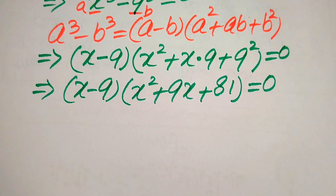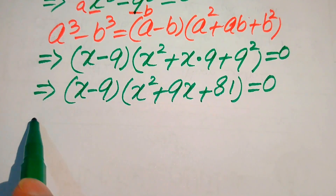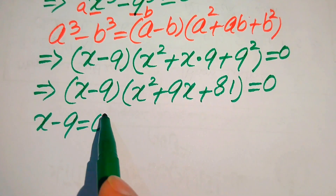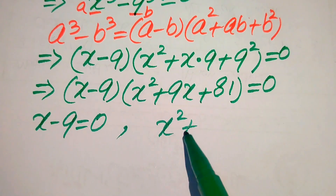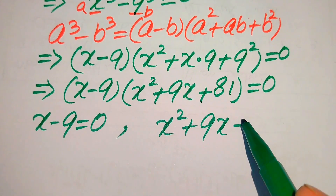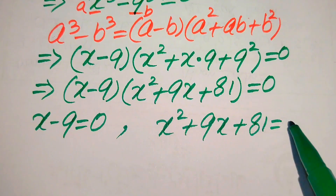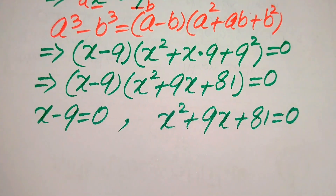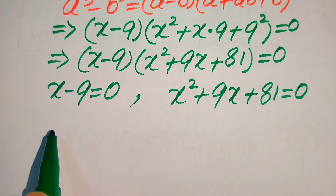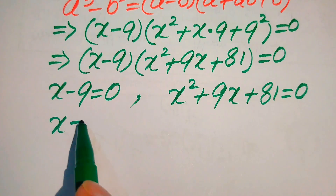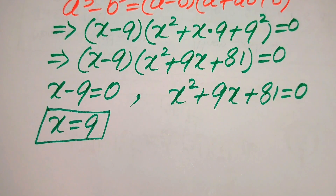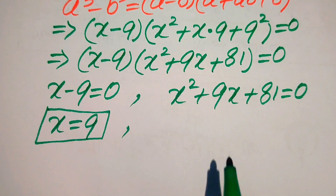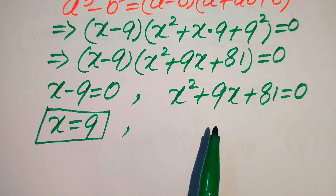In the next step we divide this equation into two cases. The first case is x minus 9 is equals to 0, and the second case is x squared plus 9x plus 81 is equals to 0. From the first case we easily get the value of x is equals to 9. This is the first root of the given equation. Now in order to find the other roots we need to solve this quadratic equation.